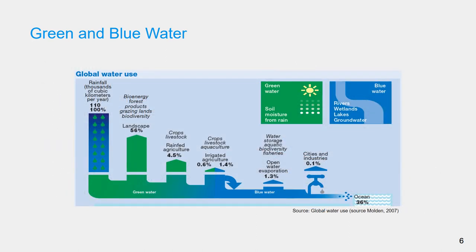Professor Moulden estimated green and blue components of global water use, as depicted in this figure. It shows that most of the green water component is consumed by the landscape — forests, grazing lands, natural vegetation and so on. Crops and livestock consume only 4.5 percent of global water use, while irrigated agriculture consumed about 1.4 percent. A small proportion of the blue water is consumed by urban areas and industries.